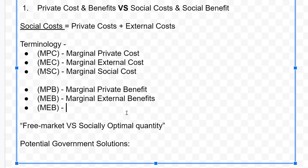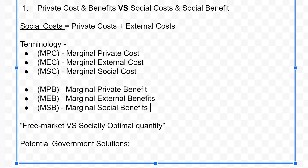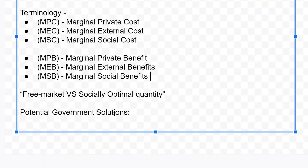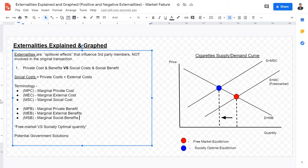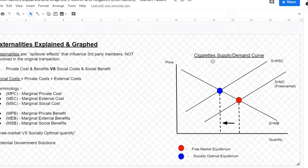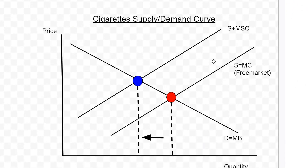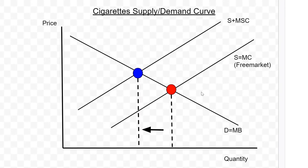Lastly, we have marginal social benefits — benefits to society as a whole. Now that we've defined these six key terminologies, what do they look like when graphed? Let's look at a prime example of a good that has negative externalities: cigarettes. Right here we have a standard demand and supply chart.